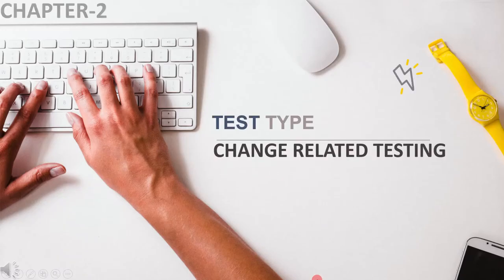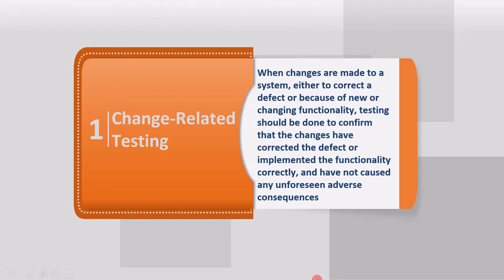Finally, we will see the last test type, which is change-related testing. When changes are made to a system, either to correct a defect or because of new or changing functionality, testing should be done to confirm that the changes have corrected the defect or implemented the functionality correctly and have not caused any unforeseen adverse consequences.